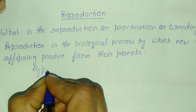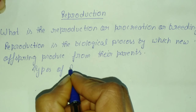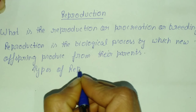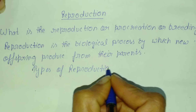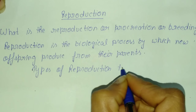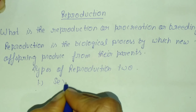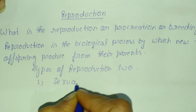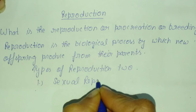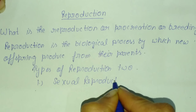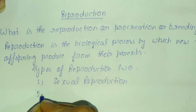Types of reproduction. Reproduction is of two types. First, sexual reproduction, and second, asexual reproduction.